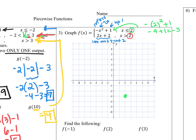For the other function at the endpoint, I take two times two plus two, which is four plus two, which is six. So (2, 6) is near the graph boundary. Since the domain doesn't include the equal-to for x greater than two, the point (2, 6) gets an open circle. Those are my cutoff points.